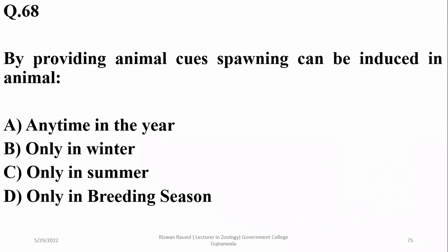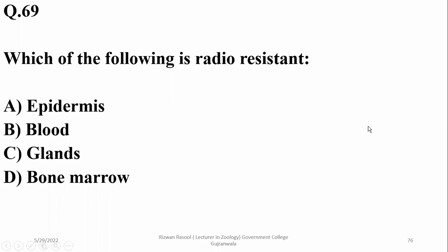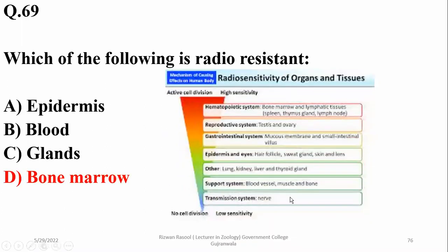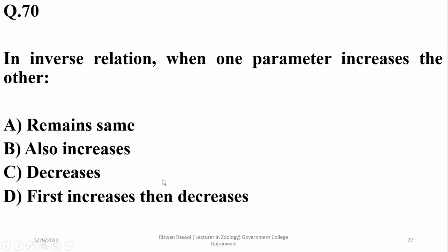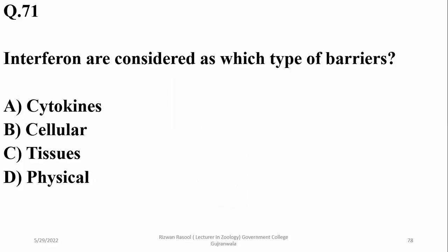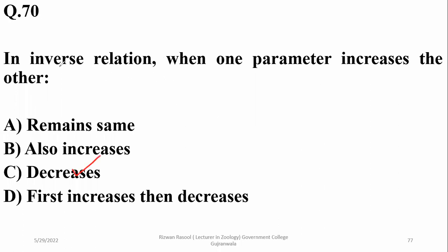Question 68: by providing animal cues and signaling, spawning can be induced in animals throughout the year — the right option is alpha. Question 69: which of the following is radio-resistant? Bone marrow has sensitivity and resistance in an inverse relationship — when one parameter increases, the other decreases. Therefore charlie is the right option.